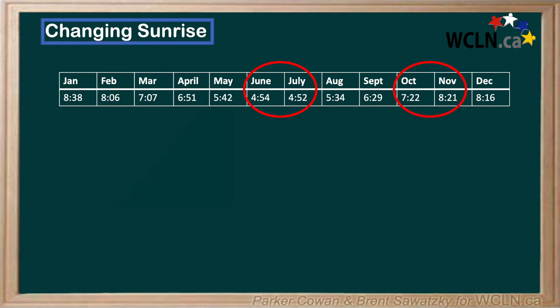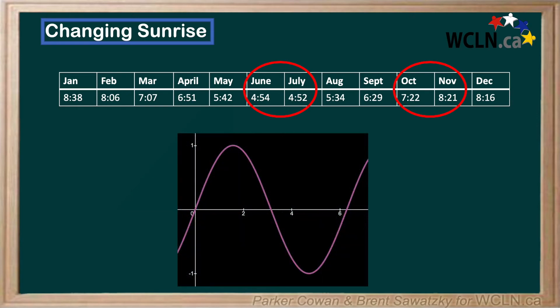Recall that at the peaks and troughs — or maximum and minimums — of a sine wave, we see the y-axis changes very little. However, when we're near the midpoints of a sine wave, the y-axis changes very quickly. Thus we can derive a sine equation to represent this situation.